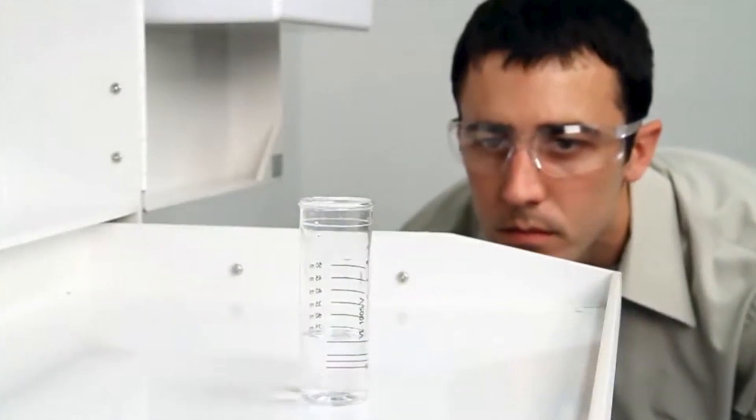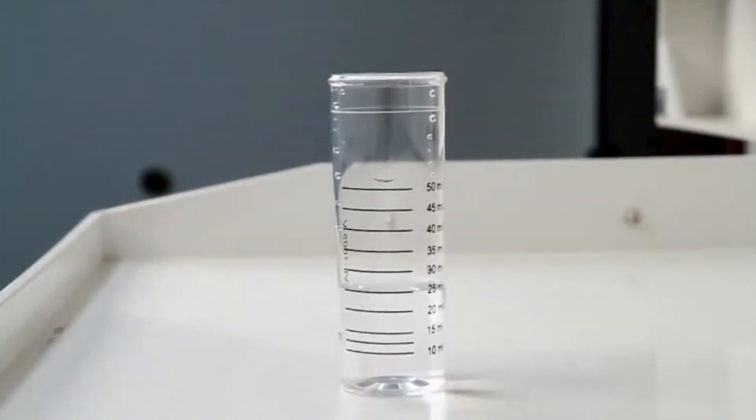When performing a drop count titration, a white background can provide contrast to better see the color changes. A cabinet tray or a white paper towel can provide that contrast.